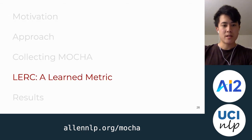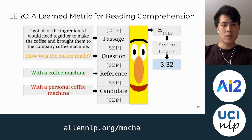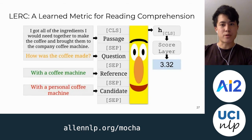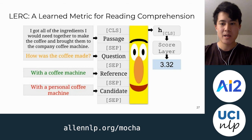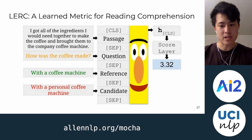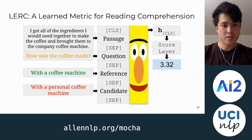We now present LURC, a learned metric for reading comprehension. LURC is pretty straightforward — it's a BERT-based model which takes as input the passage, question, reference, and candidate, and is trained to do regression and mimic the human judgment scores.